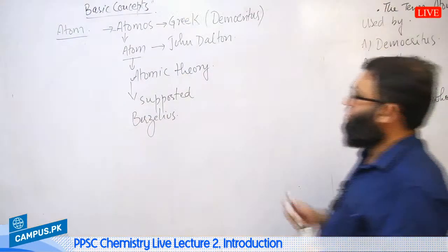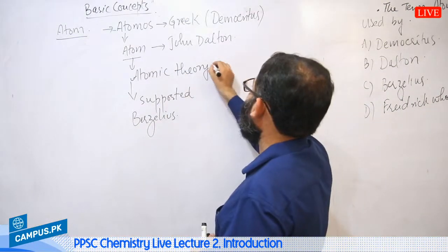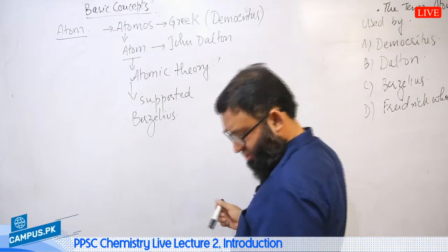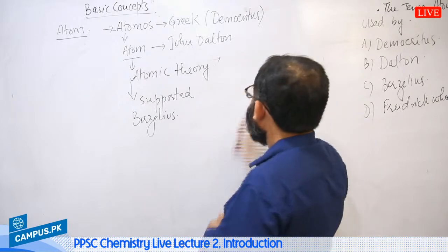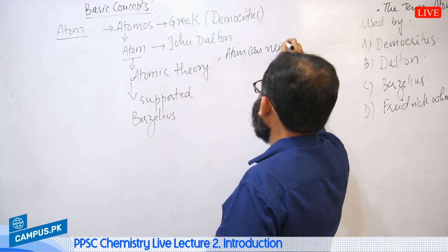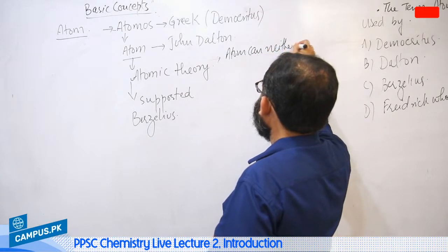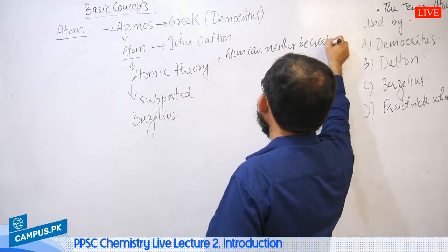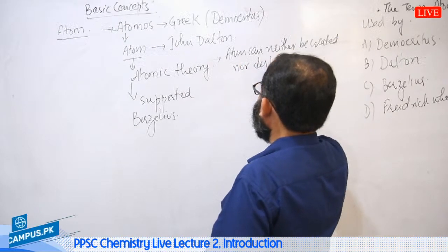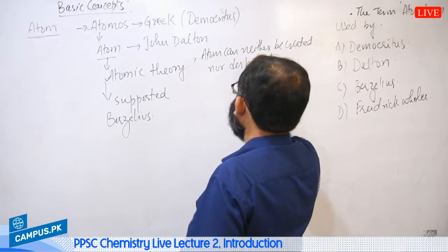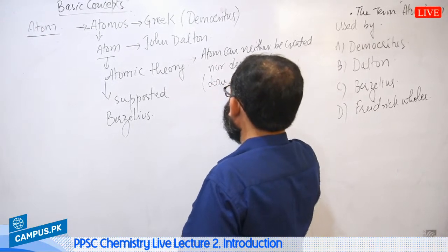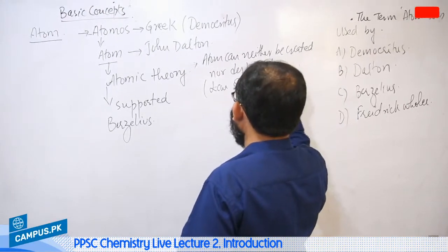When we study the Atomic Theory, its first point was: an atom can neither be created nor destroyed, which is also called the Law of Mass Conservation.